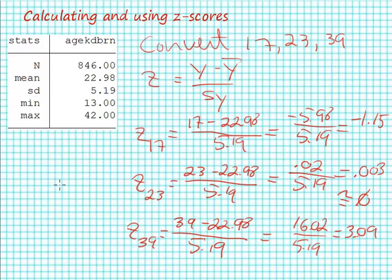There we are. We've taken three ages drawn from a sample with a mean of 22.98 and a standard deviation of 5.19, and converted the numbers 17, 23, and 39 to z-scores which respectively are minus 1.15, 0.003, and 3.09.